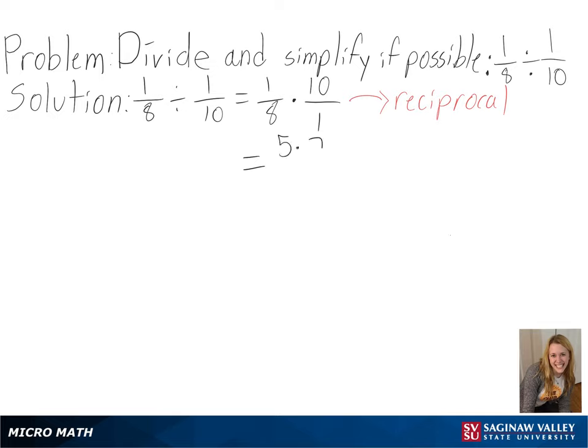We can then put this into simpler terms by writing 10 as 2 times 5 and 8 as 2 times 4. Then we can simplify this, since 2 over 2 is equal to 1, and any number multiplied by 1 is itself.